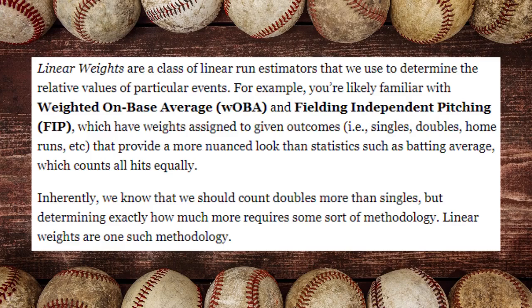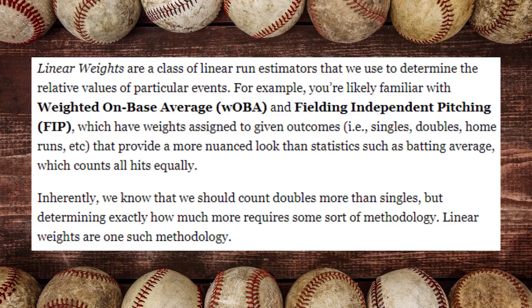These numbers come from linear weights. Linear weights represent the value of each outcome's impact on scoring runs. Linear weights are a class of run estimators used to determine the relative values of particular events. They're used in WOBA as much as they're used in FIP, which is Fielding Independent Pitching, a pitching statistic.